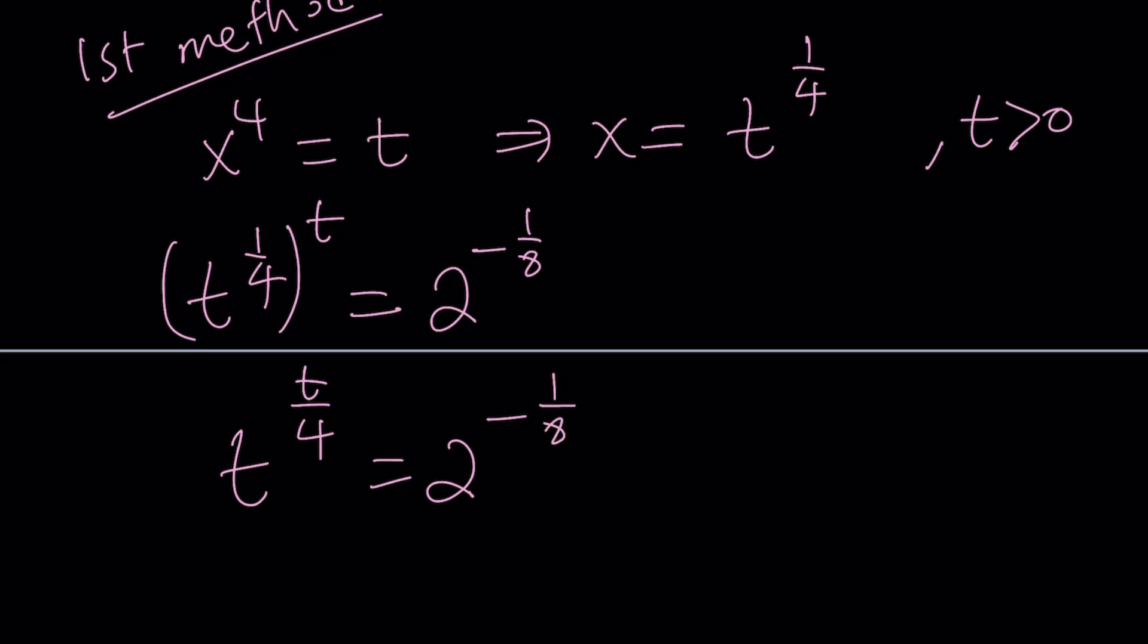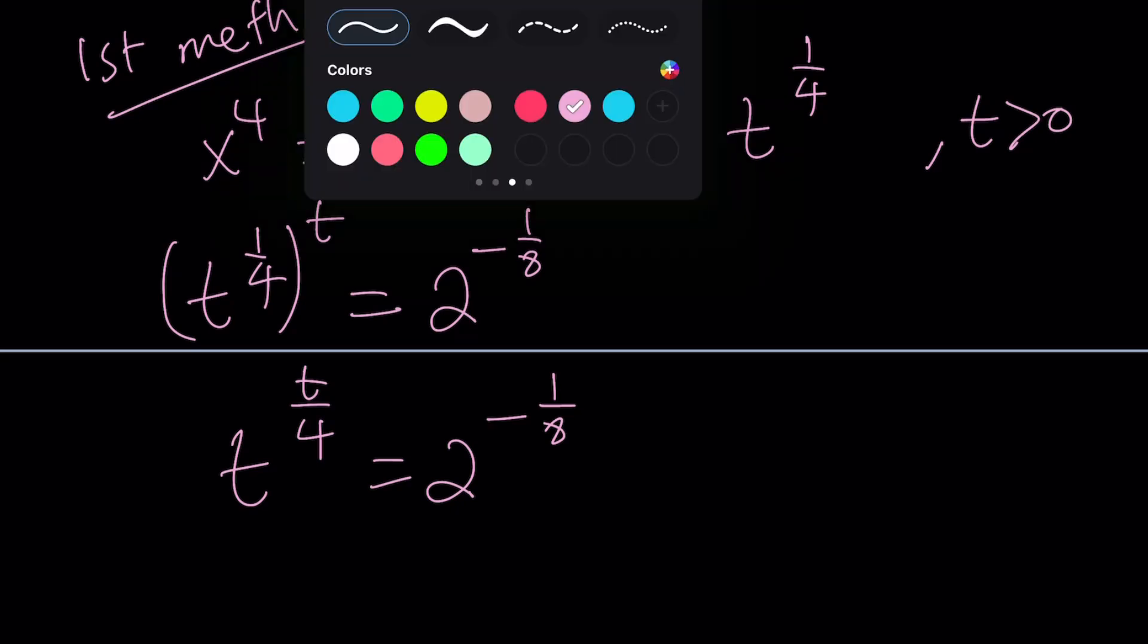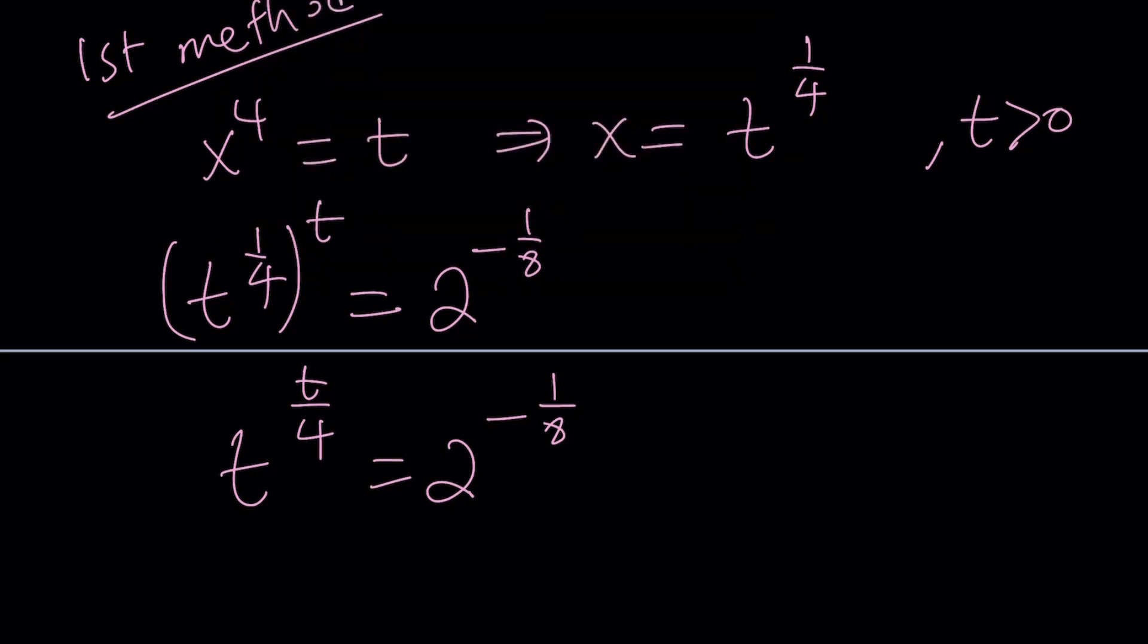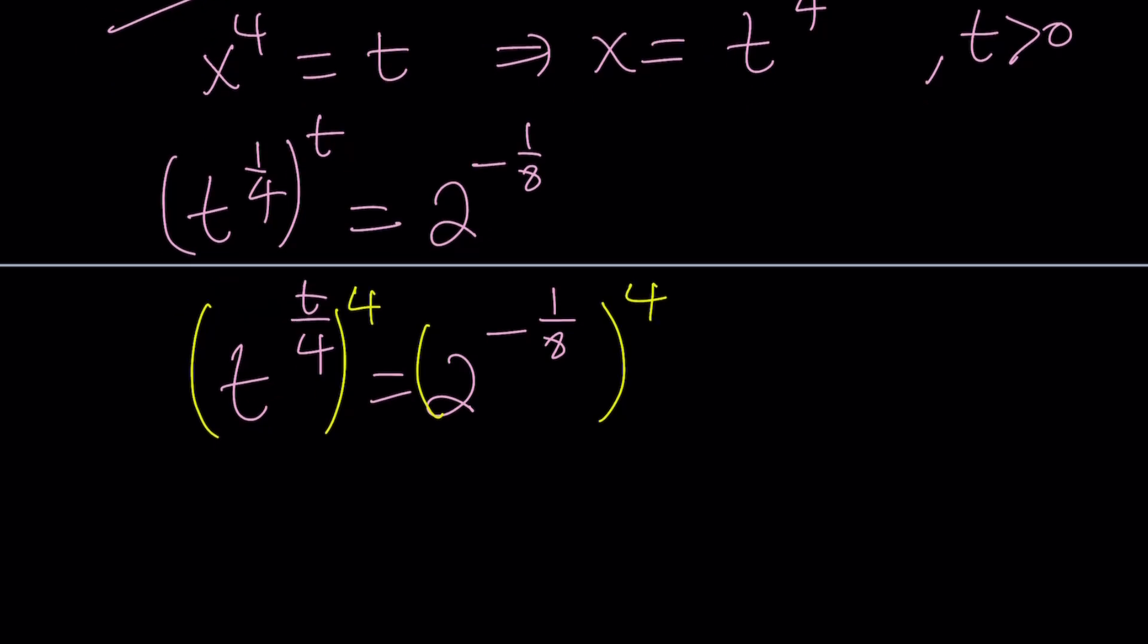So this is my expression. t is positive. Let's raise both sides. Before raising both sides, why don't we just multiply the exponents? So we get t to the power t over 4 equals 2 to the power negative 1 eighth. And then we can talk about raising both sides to the fourth power. Because I want to get t to the t. So the 4 is going to cancel out. And we end up with t to the power t equals 2 to the power negative 1 half.